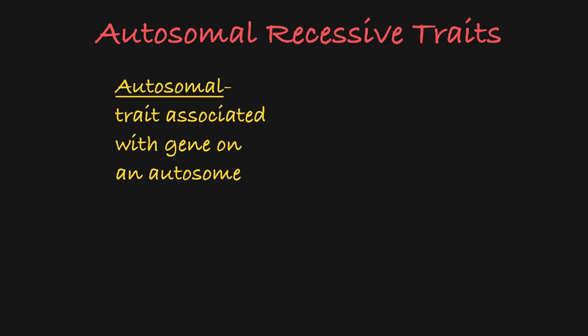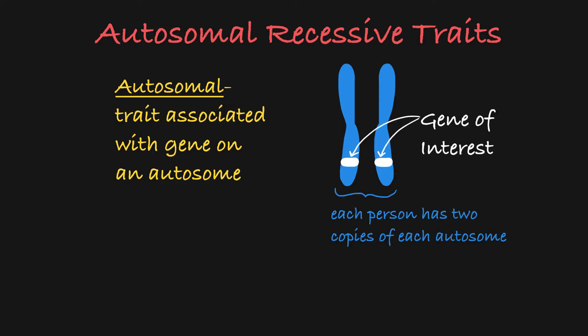In this case, autosomal refers to the fact that the trait you're looking at is associated with a gene on an autosome, like chromosome 1 or chromosome 2. This means that each person has two copies of this gene.